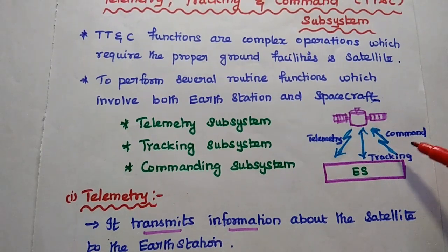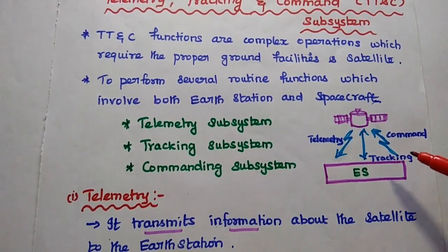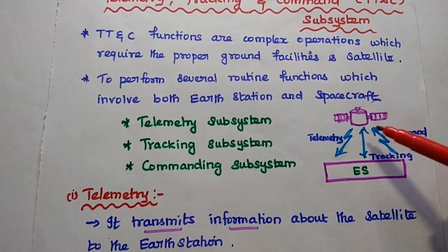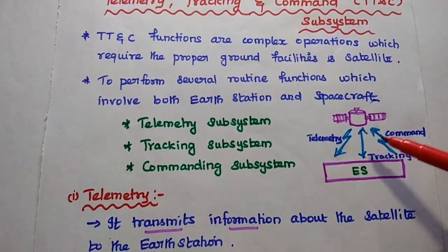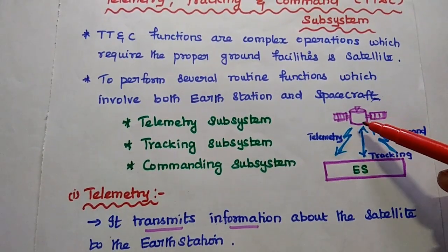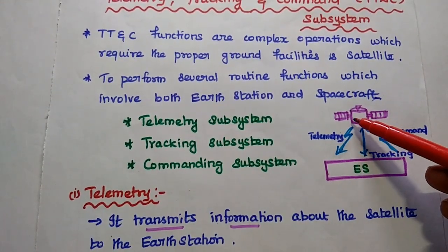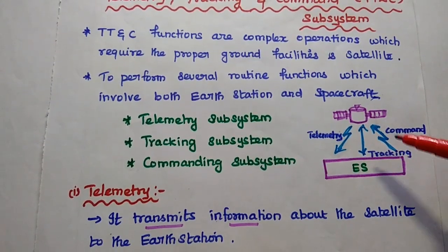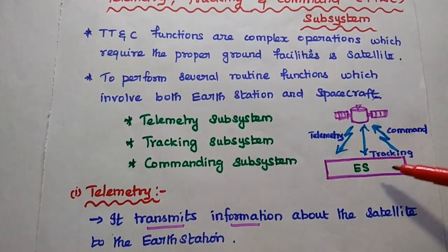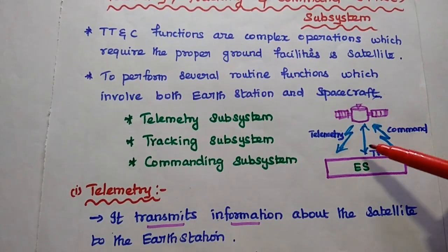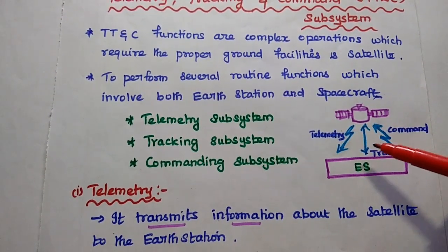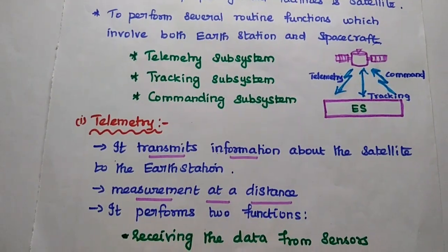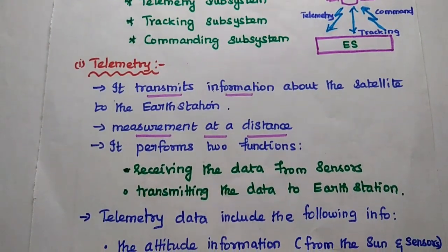The command system is mainly used to receive the command signal from the earth station. The command system is present in the satellite and receives control signals from the earth station. Telemetry transmits the information of the satellite to the earth station, while the command signal means the satellite receives the control signal from the earth station to keep the performance of the satellite in a better way.